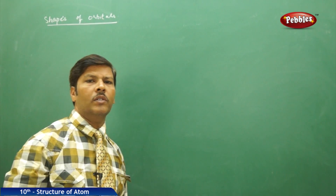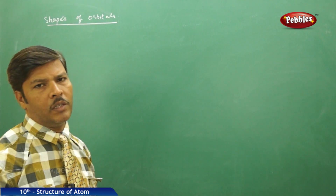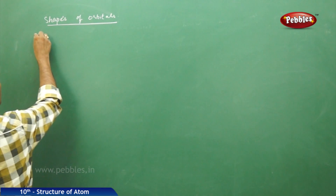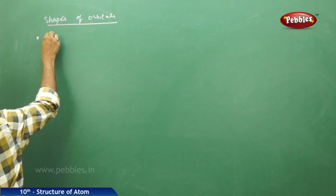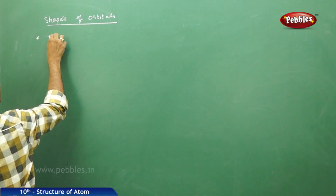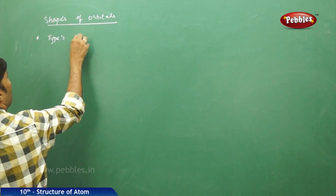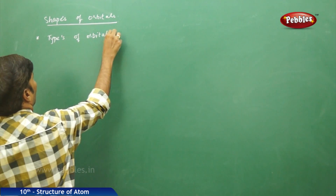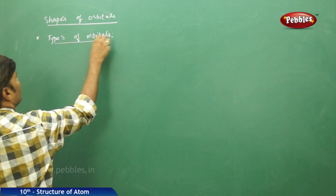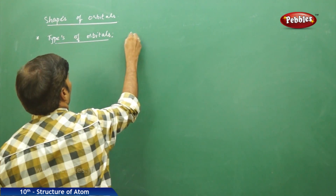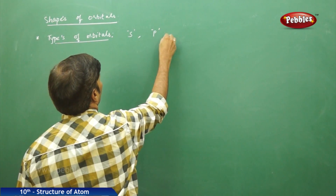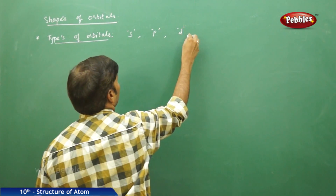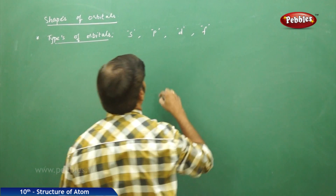Next topic under our discussion is shapes of orbitals. When we go for types of orbitals, we have s orbital, p orbital, d orbital, and f orbital.